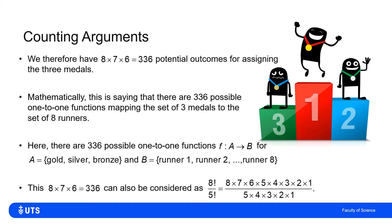We'll often see this written in factorial notation — this sort of descending integers multiplied but truncated at some point. So 8 × 7 × 6 can be written as 8 factorial divided by 5 factorial, which is 8! / 5! — that is, (8 × 7 × 6 × 5 × 4 × 3 × 2 × 1) / (5 × 4 × 3 × 2 × 1). By adding the extra terms on top and putting them on the bottom, that's a way of writing this truncated product 8 × 7 × 6 in terms of factorial functions.